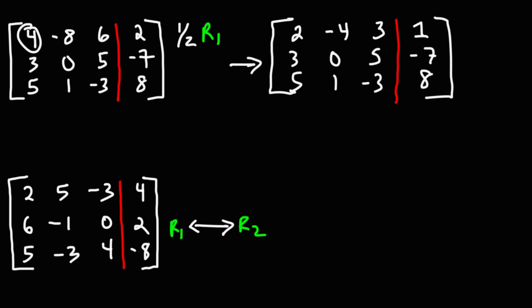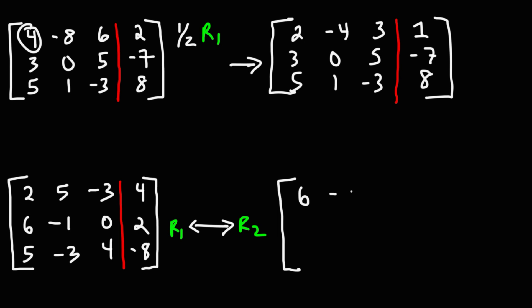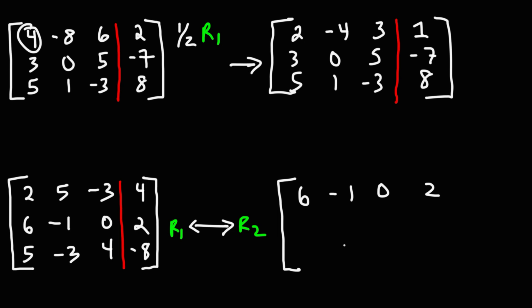For the next one, we have R1 being interchanged with R2, which means we're going to switch row 1 with row 2. The numbers in row 2 — 6, negative 1, 0, and 2 — we write in the first row. Then the elements from row 1 — 2, 5, negative 3, 4 — move to row 2. Row 3 remains the same. That's the answer for this problem.